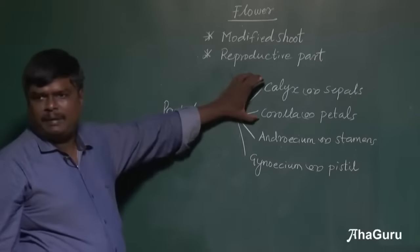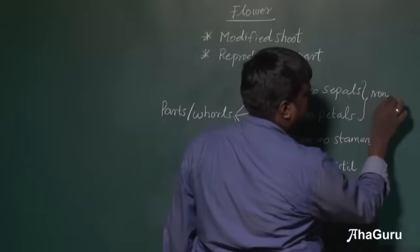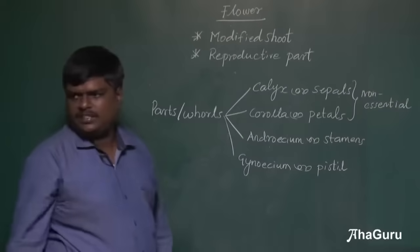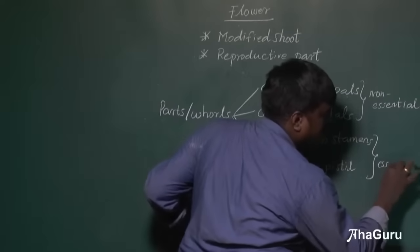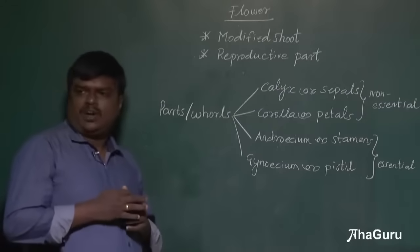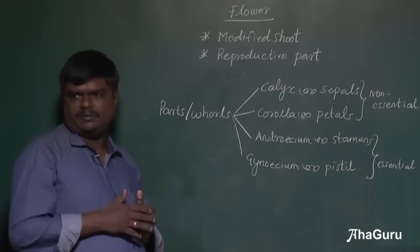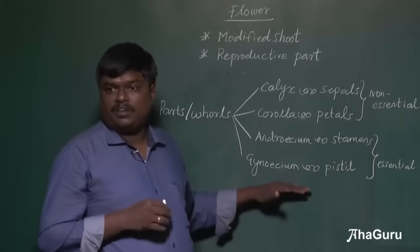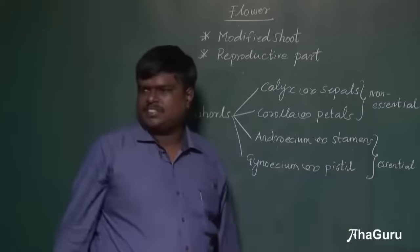The first two parts — calyx and corolla — are known as non-essential parts. Androecium and gynoecium are known as essential parts. The reason calyx and corolla are non-essential is they are not directly involved in the process of reproduction; they just help in the process. Whereas androecium and gynoecium are directly involved in reproduction, which is why they are known as essential parts.